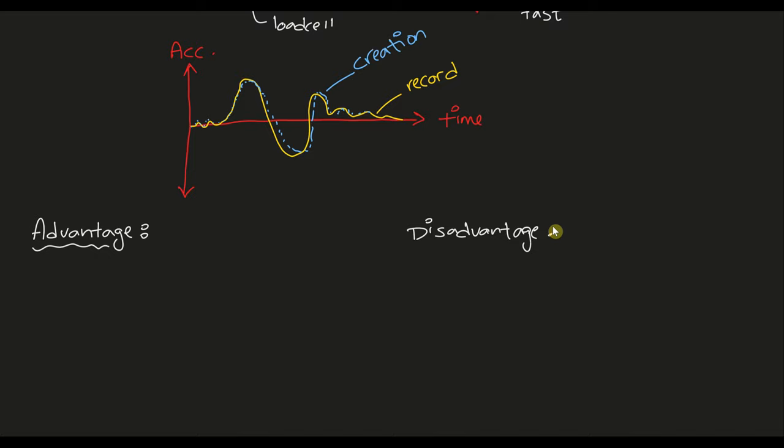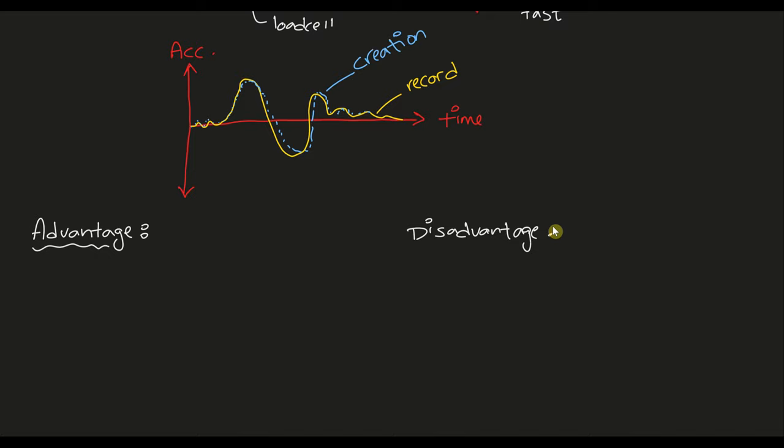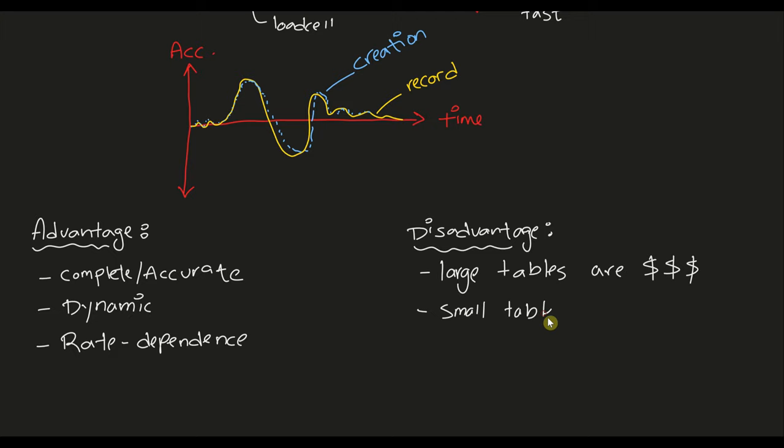Now looking at the advantages and disadvantages of the shake table testing method. In terms of advantages, this is a complete and accurate testing method. It is dynamic and it can capture rate dependent behaviors in some materials. In terms of disadvantages, big shake tables are really expensive to build and operate. And small shake tables require dynamic similitude scaling, which can be really hard to do. And also you have to build an entire structure. You can't just test one element at a time.